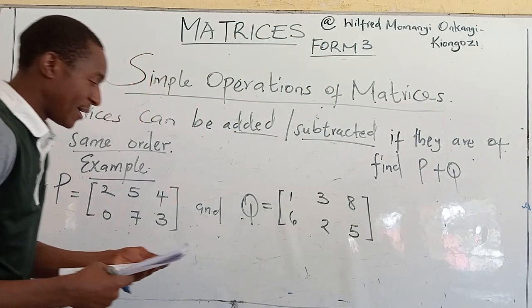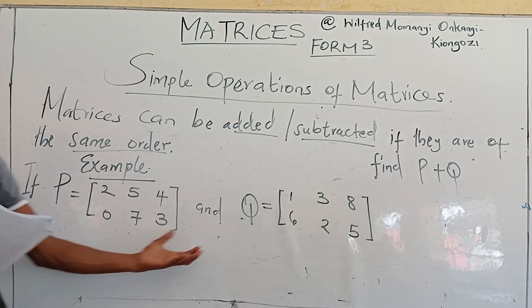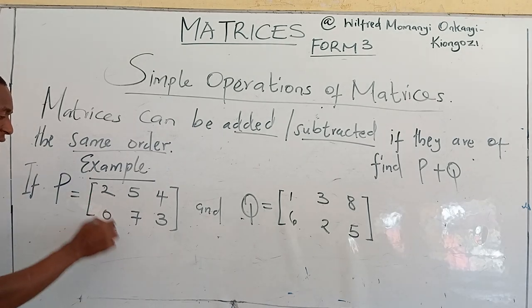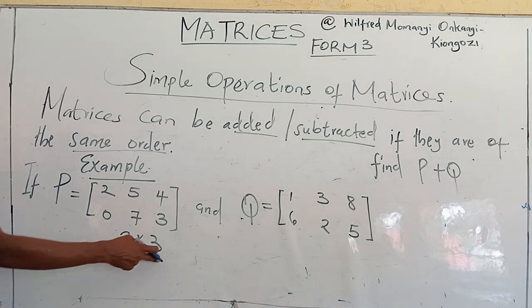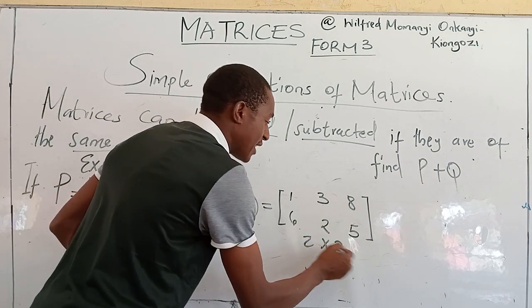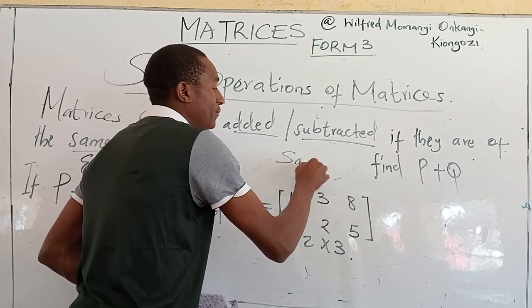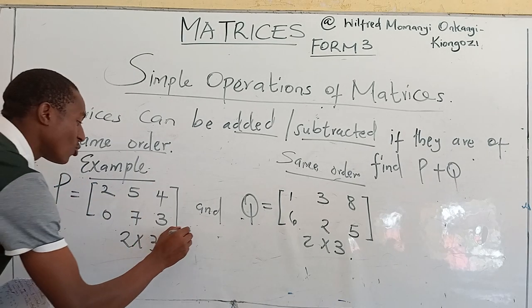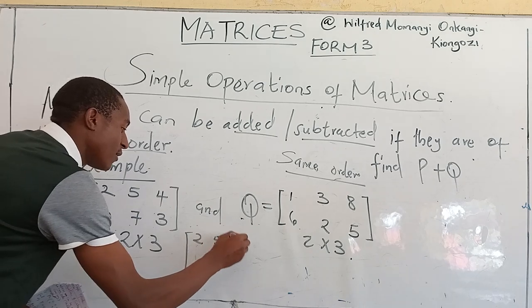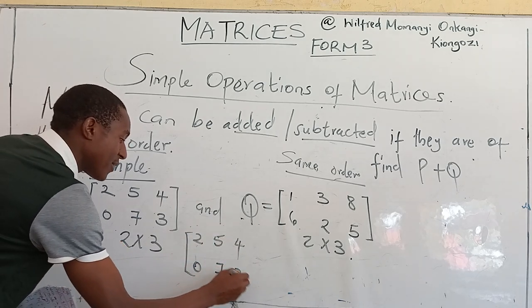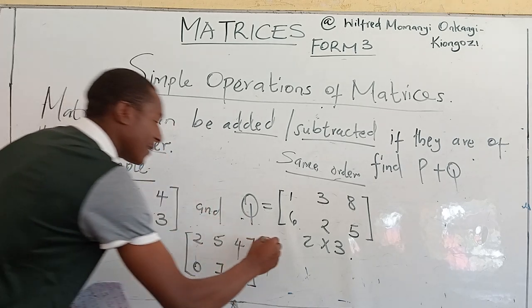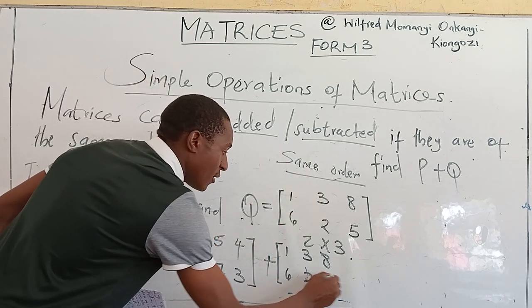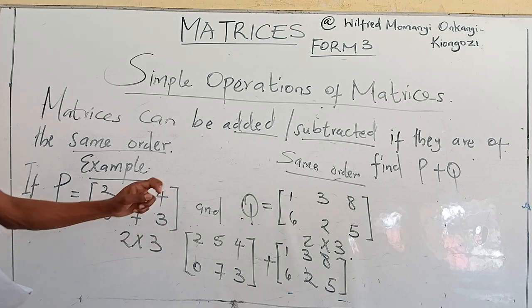So this one is very simple, because what we do is look at the order of these two matrices. This is a 2 by 3 — 2 rows times 3 columns — and this one is also a 2 by 3. That means they are of the same order. Then what we do here is we add. So first of all, let us write the two matrices: [2, 5, 4; 0, 7, 3] plus [1, 3, 8; 6, 2, 5]. So we add the corresponding elements.